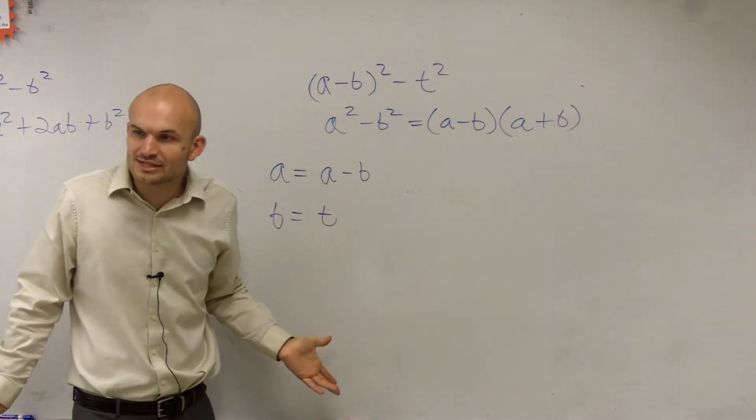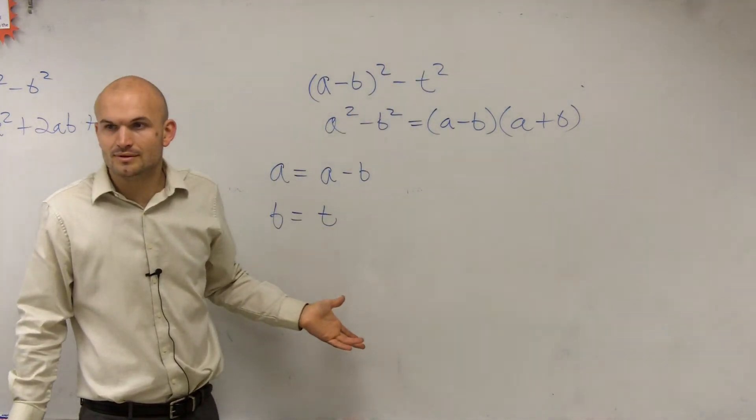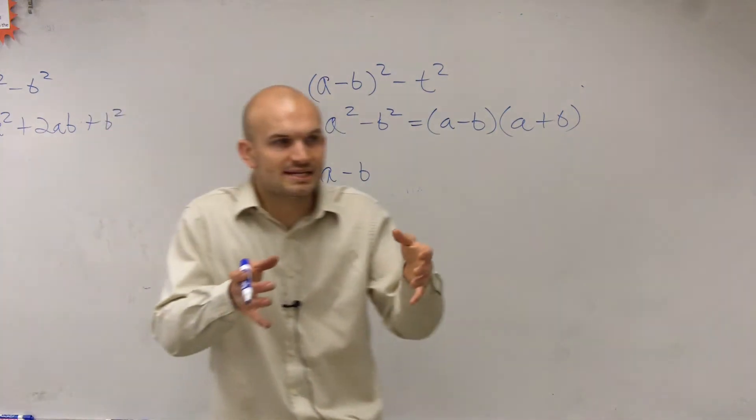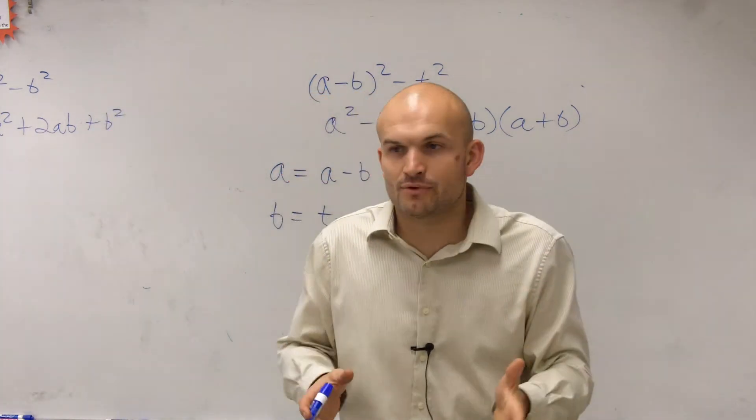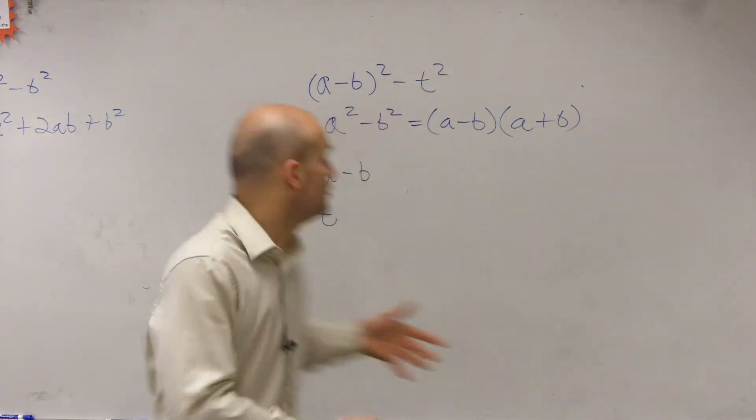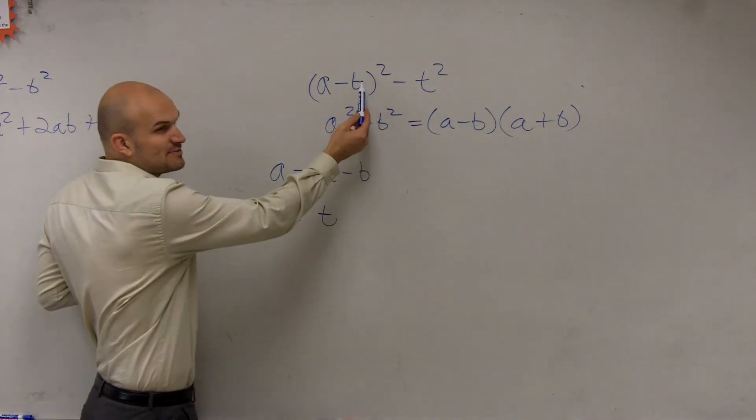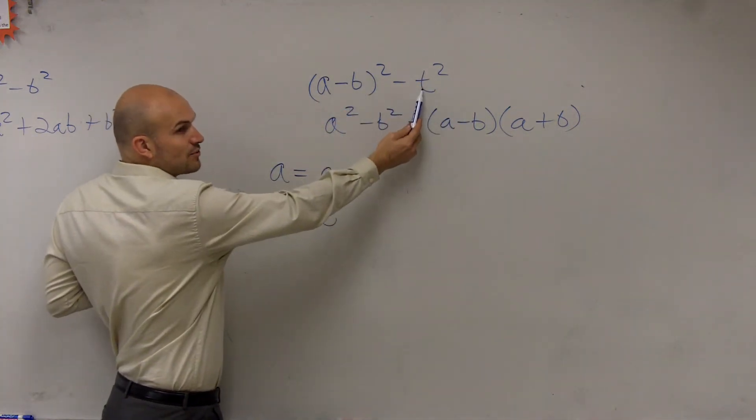So I already have my a and my b. I don't need to do anything special with it. Because all you're looking into is a squared minus b squared. So what's your a? What number is being squared? Well, in this problem, a minus b is being squared. What number in here is being squared? t.